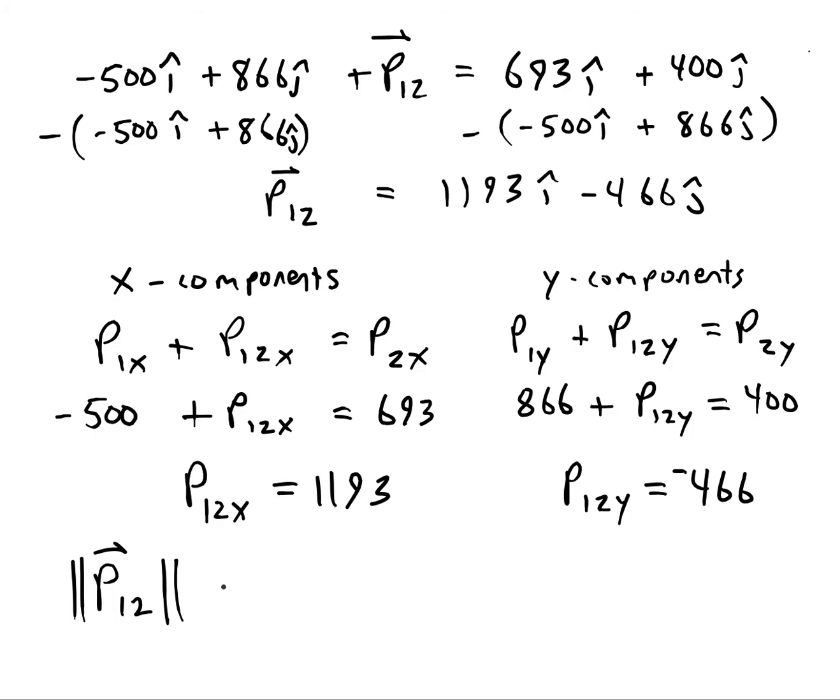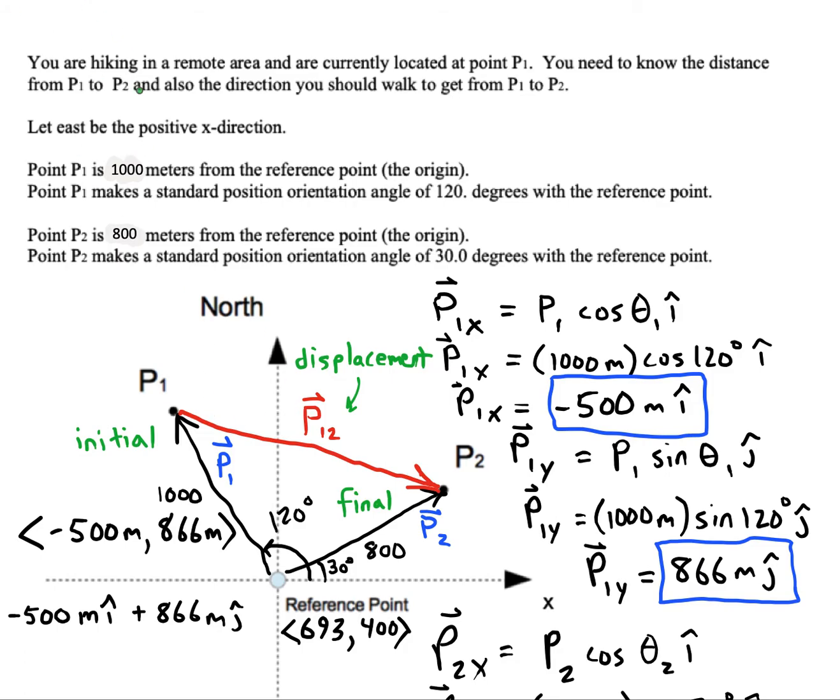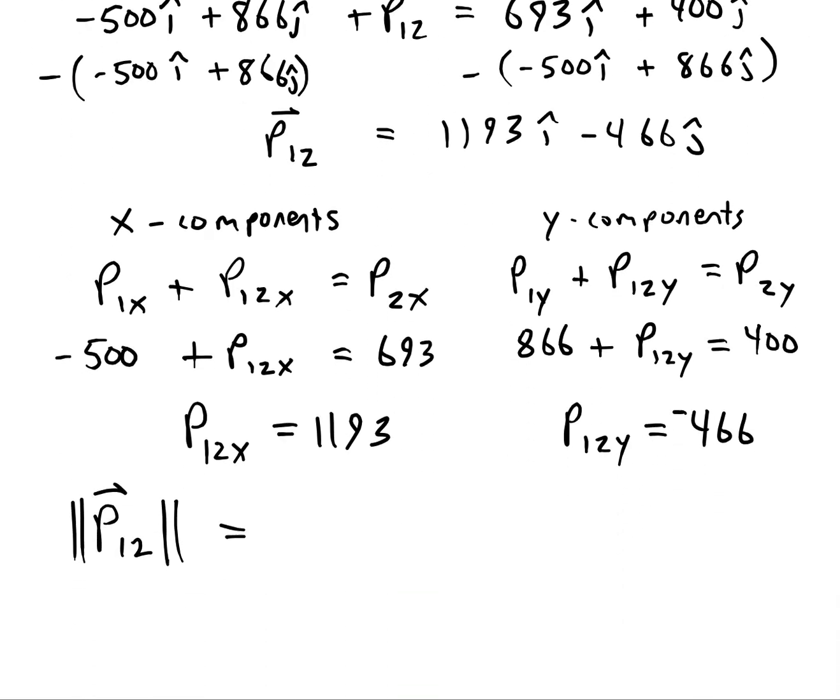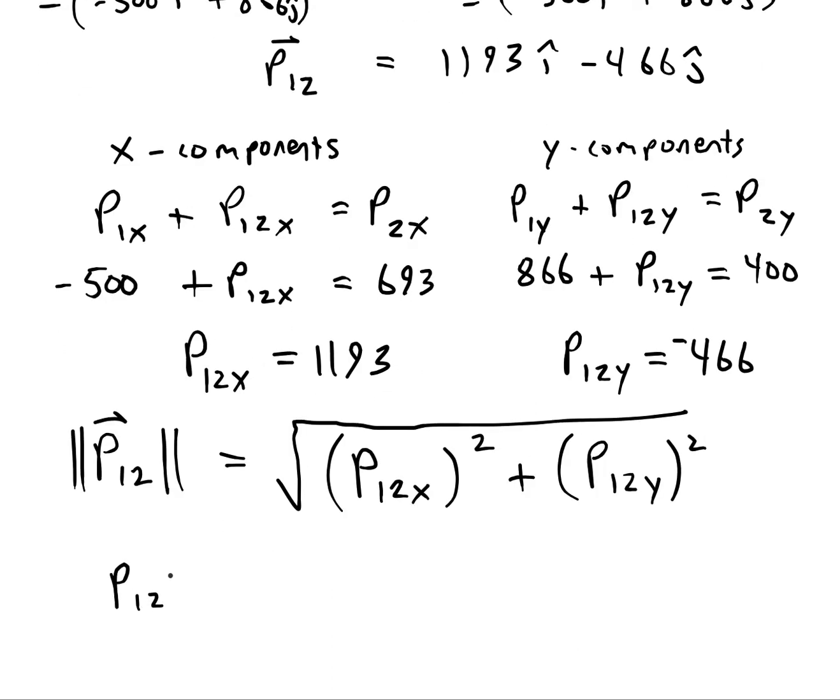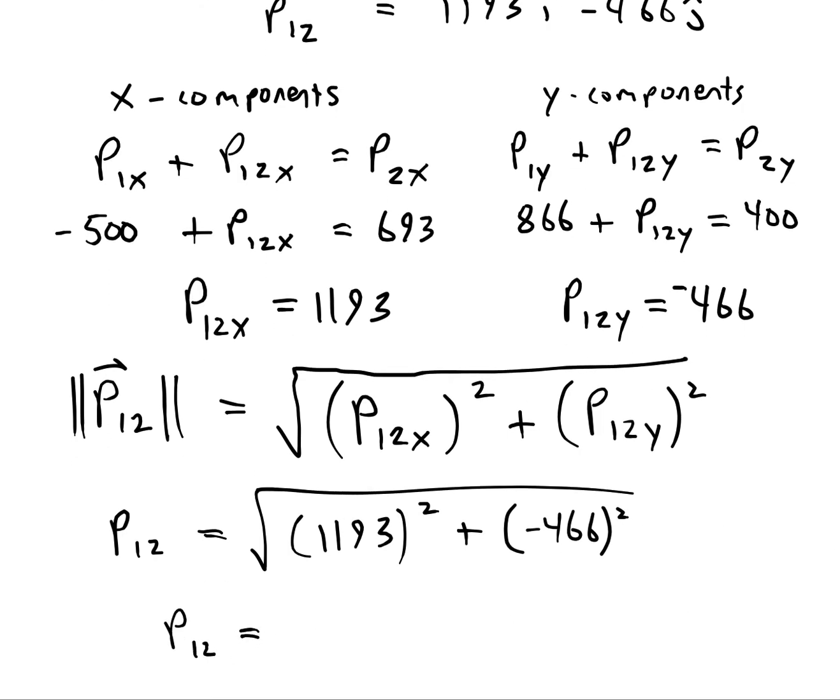What do I mean by the length? I mean we've got to find out how large is that vector if we were to just measure it from P1 to P2. The formula for magnitude of a 2D vector will be to take its x component, square that, and then its y component, square that, and we just want to sum those and take the square root. So 1193 squared plus negative 466 squared, so P12 is 1281.